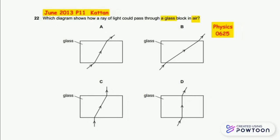We highlight two key words: glass and air. The light starts to transfer from air, then to the glass block, and then finally to the air again.